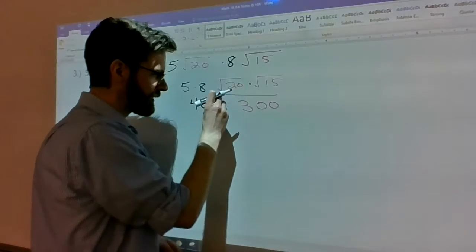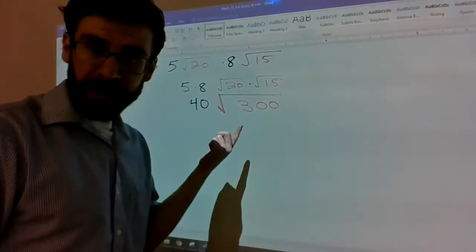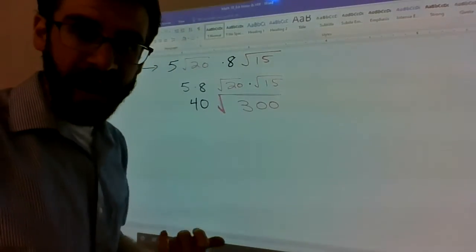And I can take 5 times 8, that's 40. And if the roots match each other, so it's a square root here and a square root there, I can actually multiply the numbers inside the roots. So it would be 20 times 15, which is root 300.